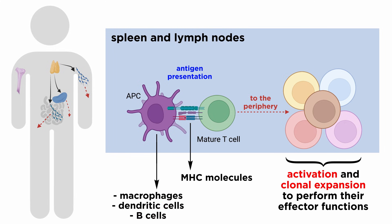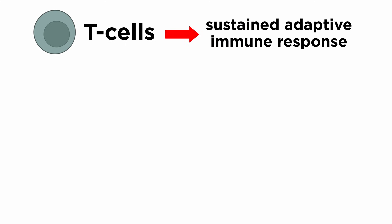The TCR interacts with the antigenic peptide after which T cells get activated, undergoing clonal expansion and differentiation to perform their effector functions. Therefore, T cell signaling is extremely important for efficient T cell development, activation, and development of overall immune tolerance.